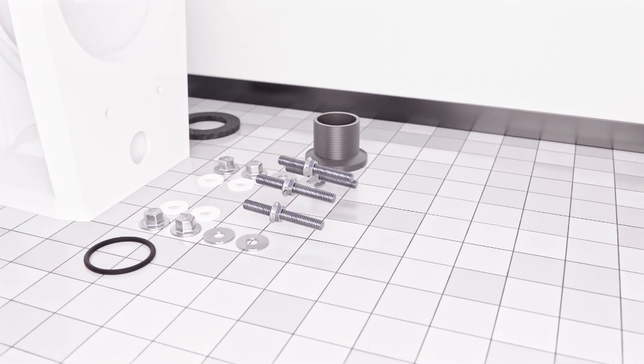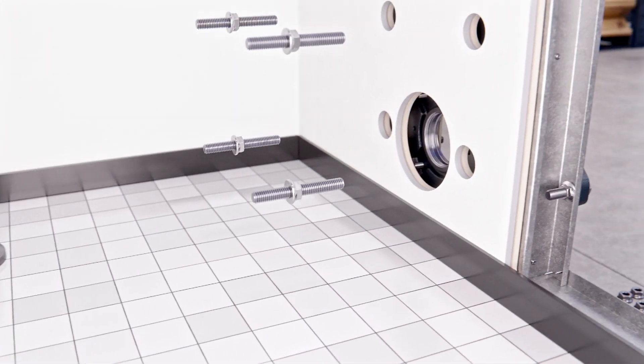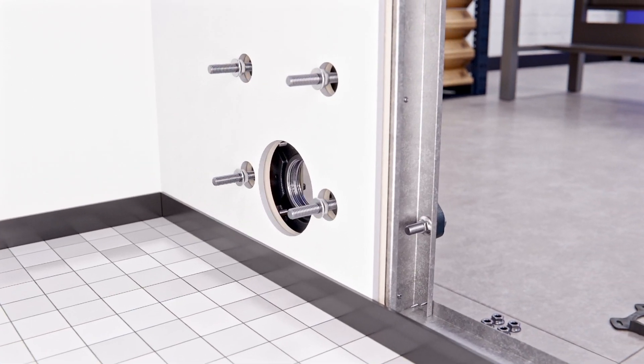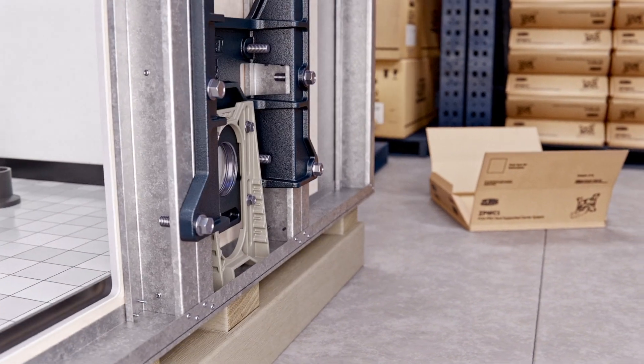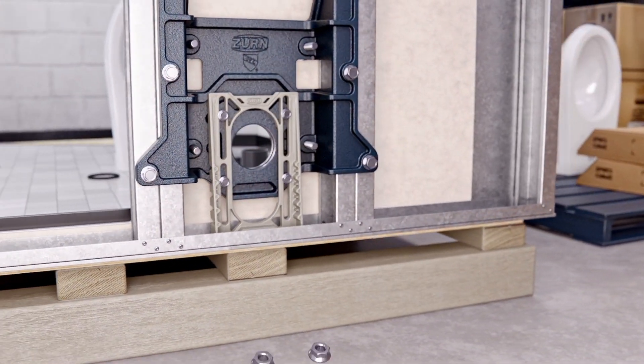Install the threaded rods into the faceplate with the water closet backing nuts. Thread the locking nuts onto the rear of the faceplate.